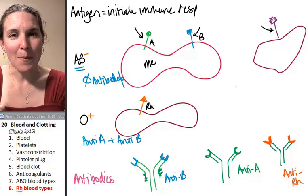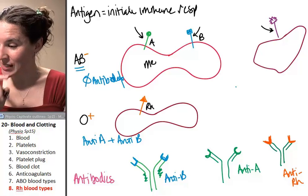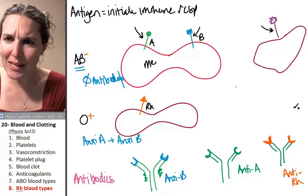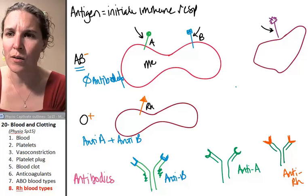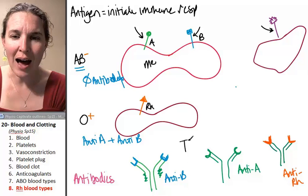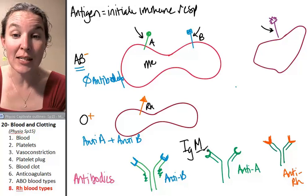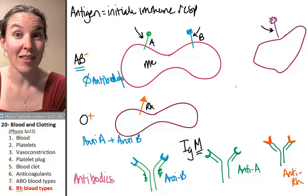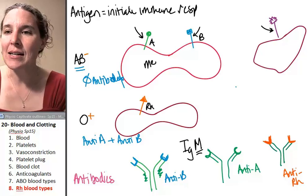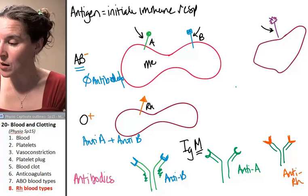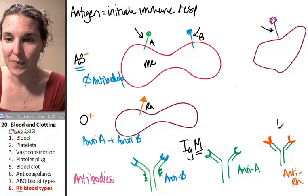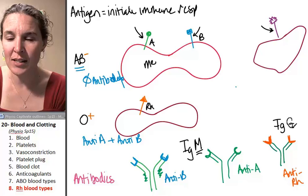Here's the interesting thing. Anti-A and anti-B antibodies are a specific kind of antibody called type M antibodies, IgM antibodies. M for massive, that's a hint. The RH antibodies are a different kind called IgGs. I kind of want to say IgG gigantic, but they're tiny.